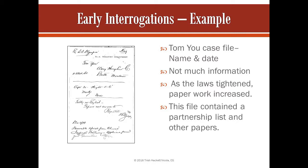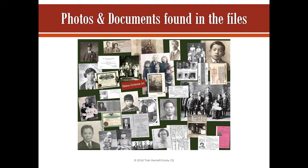This is an example of an early interrogation. It has the ship name, his name, the date, where he was from, the company that he worked for. He was living in Butte, Montana, working for a company there. It has his age, his height, and it says he had no marks, no scars, and he did not speak English. But he got a favorable report, signed by the inspector and dated. This was before they had more formal interrogations. Each time the law was renewed, it became stricter — they had more requirements.